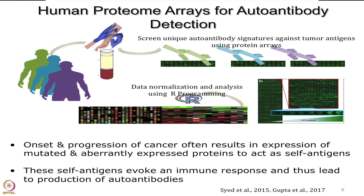The onset and progression of cancer often results in expression of mutated and abundantly expressed proteins which could act as self-antigens. These self-antigens evoke an immune response which leads to the production of autoantibodies. Here I have shown a workflow for using human proteome arrays for detection of autoantibodies. When talking about human proteome arrays, one could use purified proteins or cDNA NAPPA-based approaches. In this case we are using purified protein-based arrays consisting of almost 18,000 human proteins printed in duplicate. The idea is: if we add a patient serum sample, we can detect unique autoantibody signatures against tumor antigens using the protein array platform.